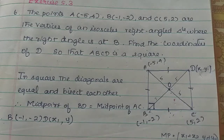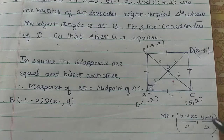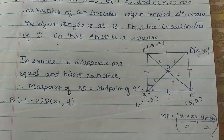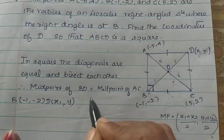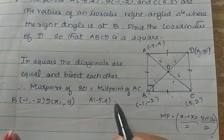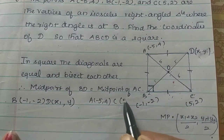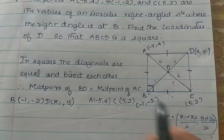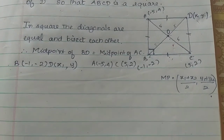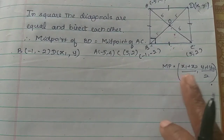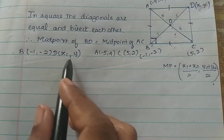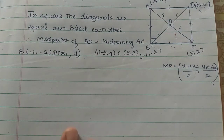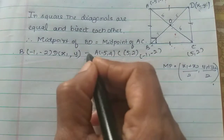We will use the midpoint formula. If you have points (x1, y1) and (x2, y2), the midpoint is ((x1 + x2)/2, (y1 + y2)/2). We set the midpoint of BD equal to the midpoint of AC and equate to find the coordinates of point D.